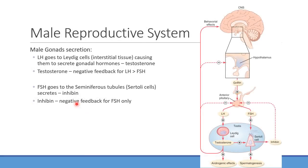Looking at the negative feedback loop: the hypothalamus releases gonadotropin-releasing hormone, which acts on the anterior pituitary to produce LH and FSH. That goes down to the testes, stimulating testosterone production and spermatogenesis. The two main things feeding back to inhibit the system are testosterone itself and inhibin. This makes sense when you think about people taking exogenous testosterone supplements — what happens to the testes? They kind of shrink. You have testicular atrophy because we're now activating that negative feedback loop, very similar to how giving estrogens to a female patient can inhibit ovulation. With males, you inhibit testosterone production and decrease spermatogenesis. The testes don't have a job to do anymore, so they atrophy.